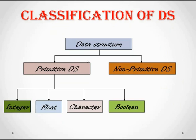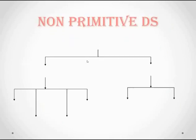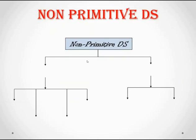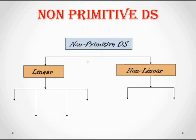Now we'll look at non-primitive data structure categories. Non-primitive data structures are split into two categories: linear and non-linear. In a linear data structure, data is stored in memory in a sequential manner — elements are stored one after another, where each element has a successor and a predecessor, except the first and last elements.